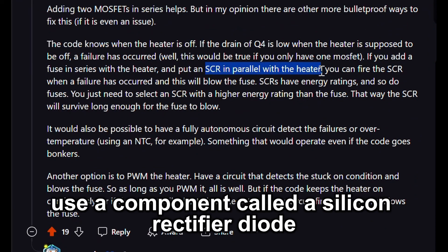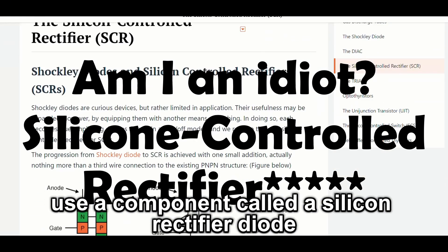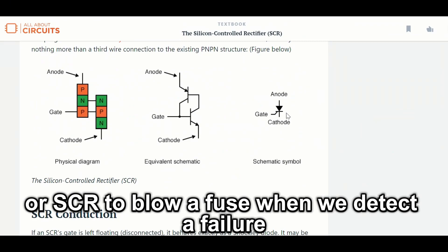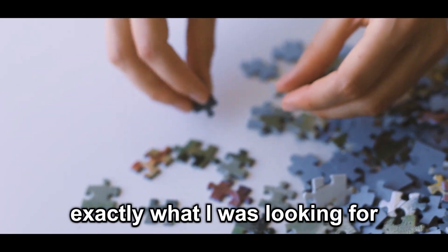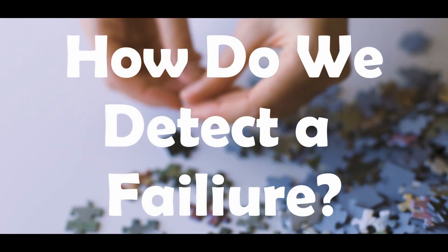Basically, the idea is to use a component called a silicon rectifier diode, or SCR, to blow a fuse when we detect a failure. This was like a missing puzzle piece, exactly what I was looking for. But how would we actually detect a failure?